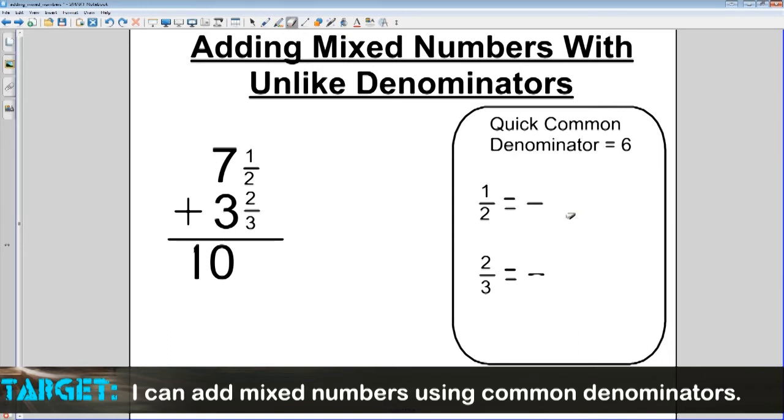Now that we know what six is, the next step was to replace the first fraction. Well, we know the denominator is going to be six. We just found that out. That's our common denominator. And we look, what did we multiply two by to get the six? Well, we multiplied it by three. So now you're going to also do the same to the one and multiply one times three, which equals three. Very simple.